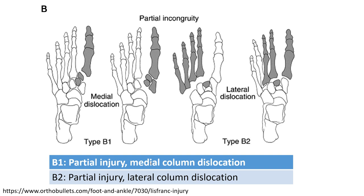Continuing with the classification: TAI-1 and TAI-2. TAI-1B shows partial injury with major column dislocation on the right side image. TAI-2B shows partial injury with lateral dislocation on the image on the left.